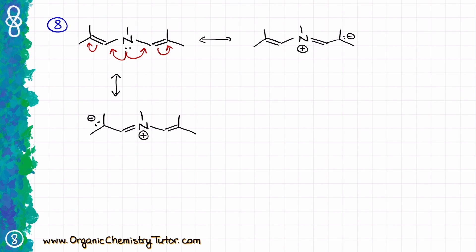Here again I have used the electron pairs and turned a completely neutral molecule into a charged molecule, so I have created extra unnecessary charges, which means that my original structure is going to be my major contributor. Did you like these examples? How did you do? Let me know in the comments below if you missed any of the resonance contributors or you mislabeled any of your major contributors. Hit the like button if you found this video helpful, and I will see you in the next one.